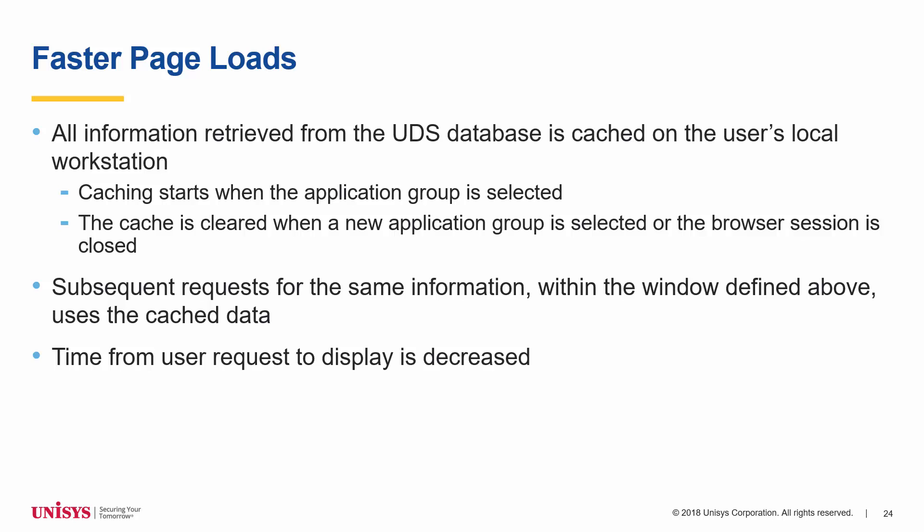From the time an application group is selected on one of the UDS database webpages until a new application group is selected or the browser session is closed, all information retrieved from the UDS database is cached on the user's local workstation. For each subsequent request of the same information within this window of time, an additional trip to the UDS database is not required. Instead, the information from the initial request is retrieved from the cache and displayed on the webpage, decreasing the time from request to display for subsequent requests.